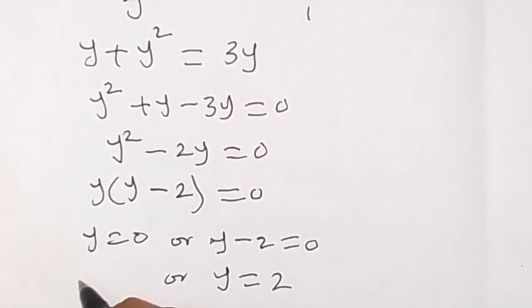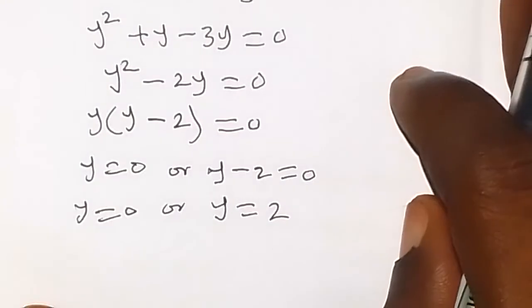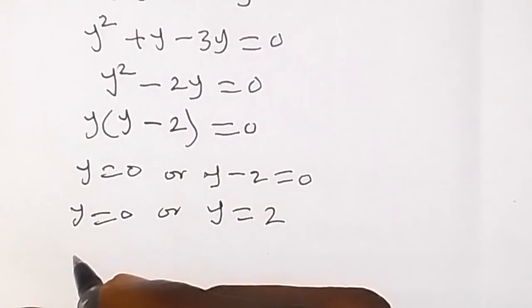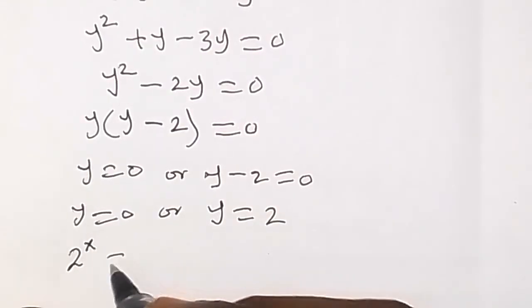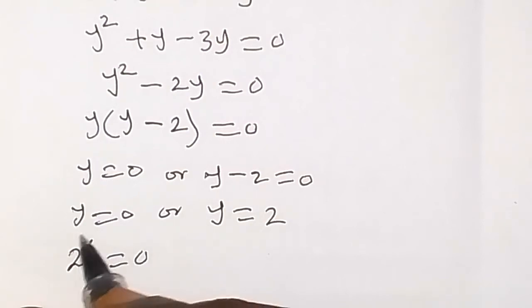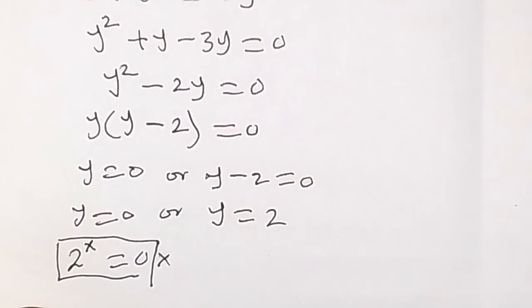So we have two answers here: y equals to zero or y equals to 2. Don't forget that our y is 2 raised to power x. When we replace y as 2 raised to power x equals to zero, we discover that there is no solution on this side.